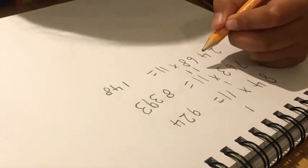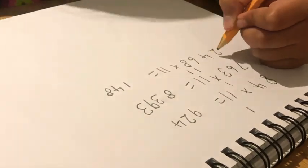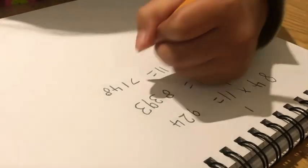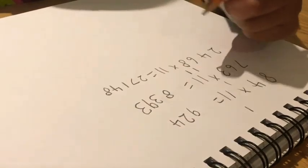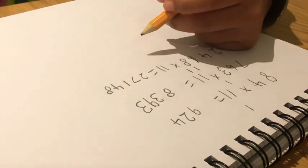And now 4 add 2 equals 6, add 1 equals 7. And now we put the two as it is. So my answer is 27148.